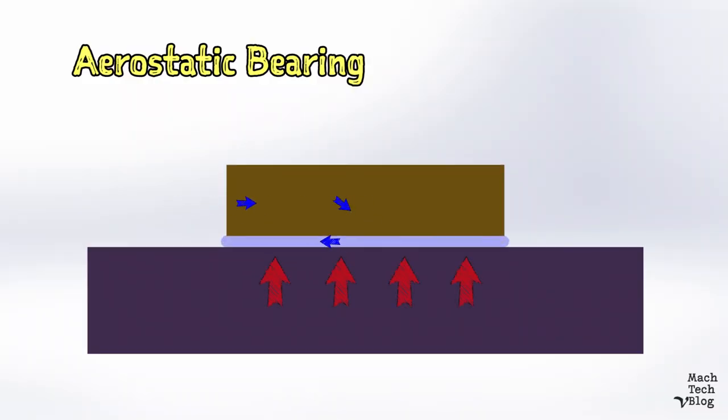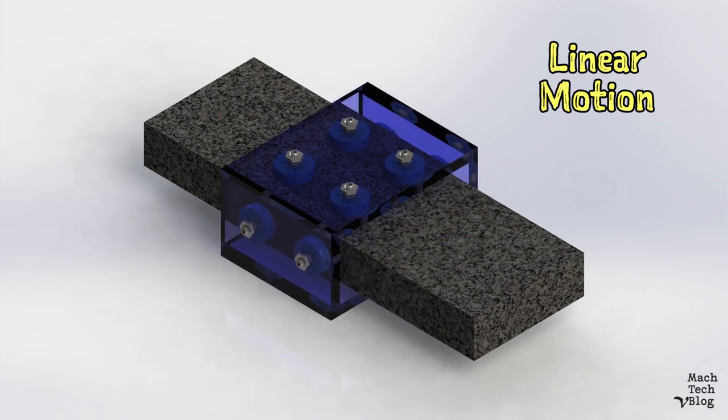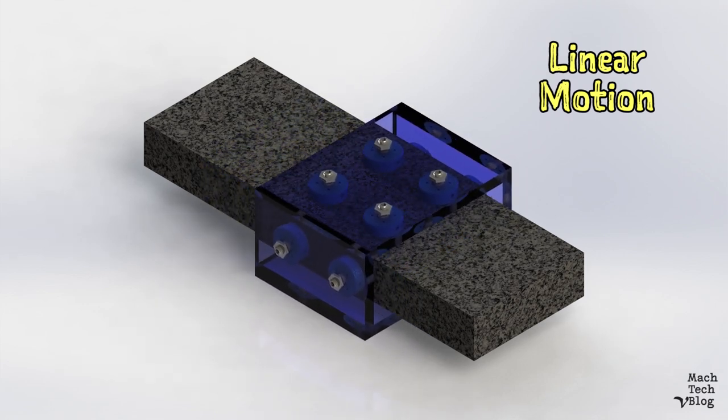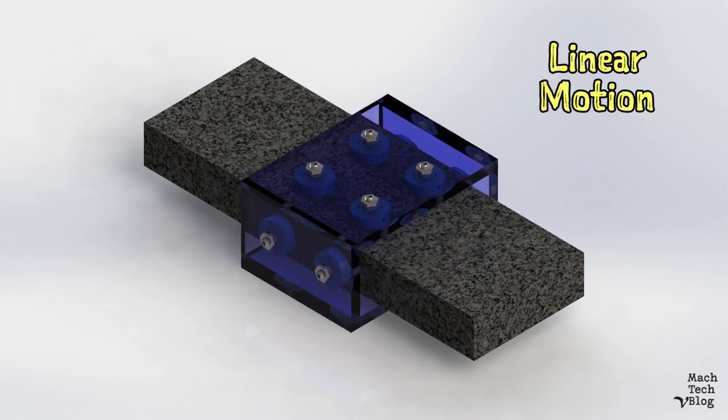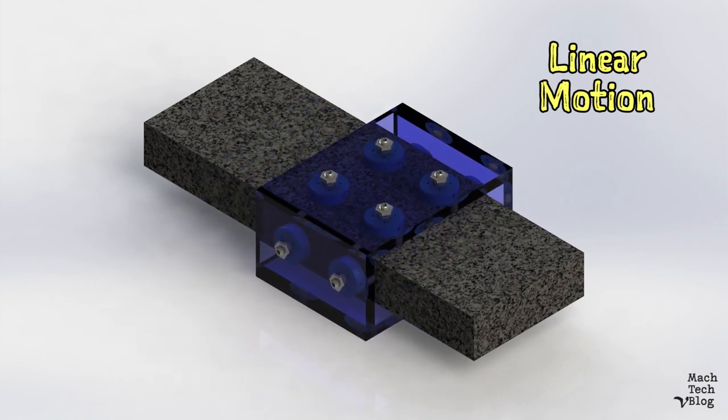Aerostatic bearings use an external source to pump pressurized air directly into the gap, which then flows outward across the surfaces to the edges and escapes to ambient pressure in the environment. They're ideal for linear motion applications because their ability to support loads is not sensitive to surface speeds and they have full performance even at zero speed.